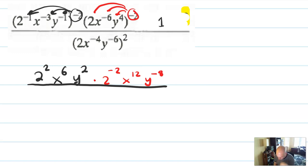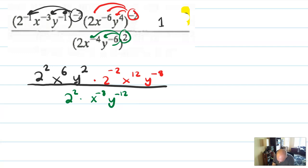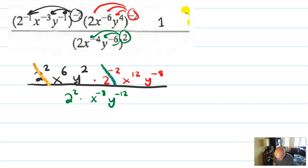I see that of all these 2 squareds, two of them are going to cancel — I have a positive and negative 2, so those reduce to 2 to the 0, which is 1. That 2 stays. Now I'm going to take everything that had a negative exponent and move it to the other side. So on top I'll have x to the 6th, y to the 2nd, x to the 12th, and x to the 8th and y to the 12th from the bottom. On the bottom I'll have a 2 squared and y to the 8th from the top.